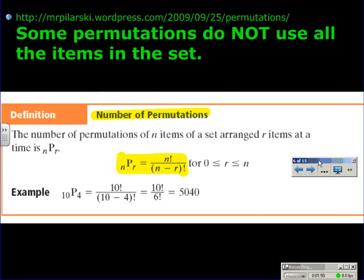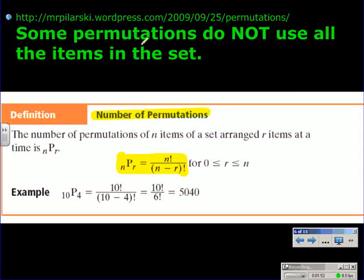Some permutations do not use all the items in the set. Here is the formal definition of number of permutations. The number of permutations of n items of a set arranged r items at a time is nPr, which equals n factorial divided by the quantity n minus r factorial, where r is between 0 and n.